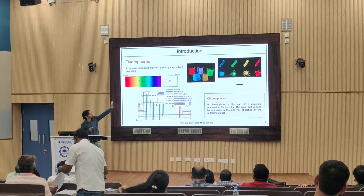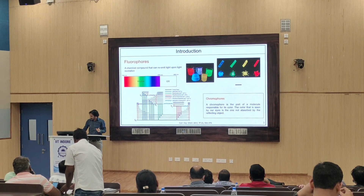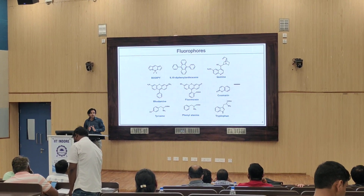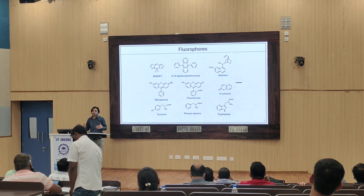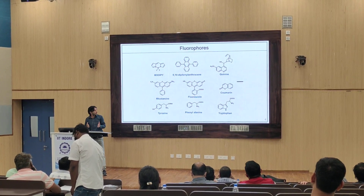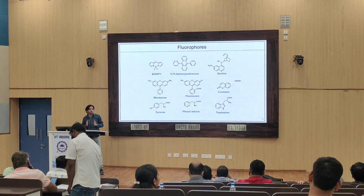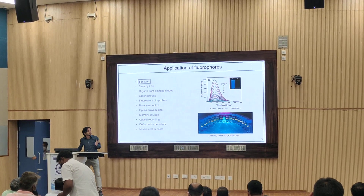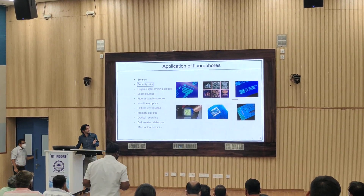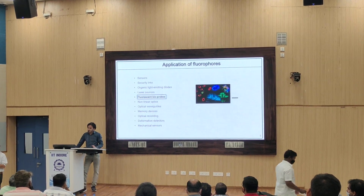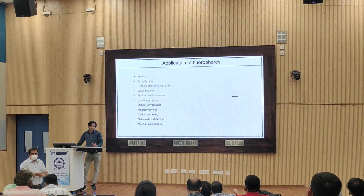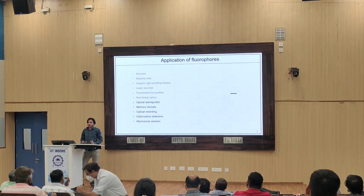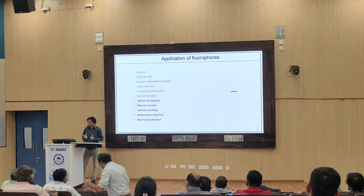Fluorophores absorb light in the UV region and emit light in the visible range, and that emitted light determines their color. The magical thing about fluorophores is that in the presence of UV radiation and darkness, only fluorophores start glowing. This makes them potential candidates for a variety of biological applications, such as tracing particular organs within cells or tissues. Other applications include sensors for detecting metal ions, security, organic light-emitting diodes, laser sources, bioimaging, non-linear optics, and mechanical sensors.